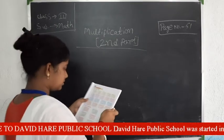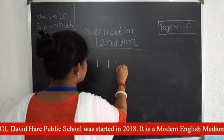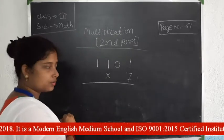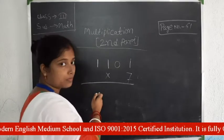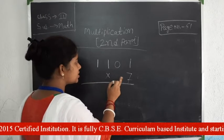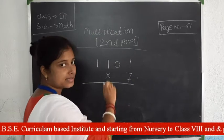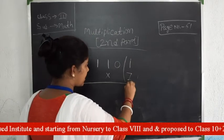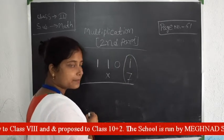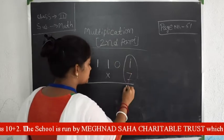I am solving problem 1: 101 multiplied by 7. As you know, multiplication, addition, and subtraction always start from the right side. On the right side the digits are 1 and 7, so first multiply 1 by 7 — 7 ones are 7.